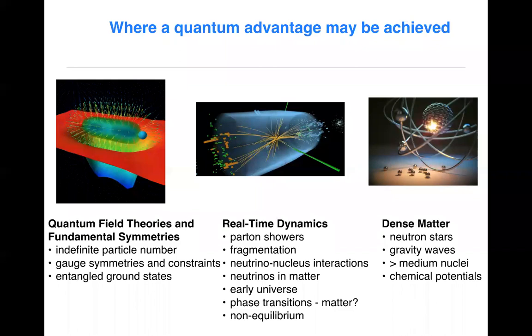If you look at the types of problems where quantum computing is expected to give an advantage at some point when the devices become capable enough, the two main areas are real-time dynamics and dense matter. So in real-time dynamics, the problems you'd like to be able to solve with precision are parton showers, fragmentation, neutrino-nucleus interactions, particularly relevant for the DUNE project, the evolution of neutrinos in dynamical matter, for instance, in astrophysical objects, the behavior of the early universe and phase transitions, the production of matter over antimatter, and generally non-equilibrium dynamics.